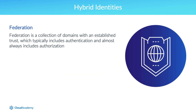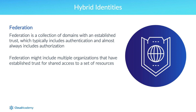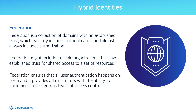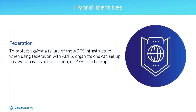Federation is a bit different from the other two solutions. It is a collection of domains with an established trust, which typically includes authentication and almost always includes authorization. In a common configuration, a federation might include multiple organizations that have established trust for shared access to a specific set of resources. Federating an on-prem environment with Azure AD allows an organization to use the federation for authentication and authorization, ensuring that all user authentication happens on-prem. Federation with ADFS and PingFederate is available, and organizations can set up password hash synchronization as a backup to protect against an ADFS infrastructure failure.